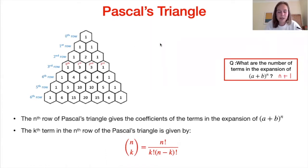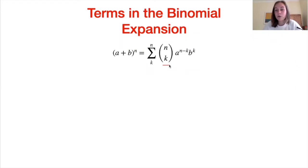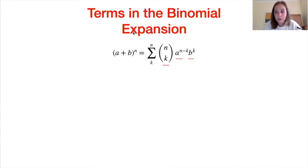Having looked at Pascal's triangle and the formula to extract each term, let's write down a general formula for the expansion of (a+b) to the power of n. The kth term of the nth row is given by n choose k, which is the coefficient of the a to the power of (n minus k) term times b to the power of k. We're working in decreasing powers of a and increasing powers of b, but it doesn't matter which way around — we could also write b to the power of (n minus k) times a to the power of k.